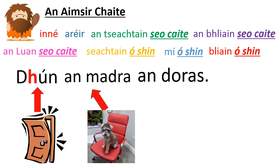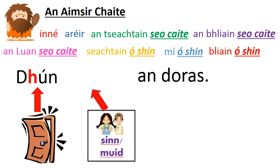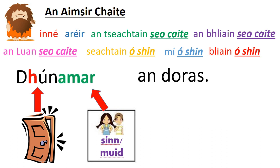You can also put any sort of subject in there — Dhún an madra an doras — the dog closed the door. Dhún Niall an doras. Dhún an múinteoir an doras. Dhún Áine an doras. Now, which one were we missing? We were missing 'muid', which in Irish we can say is 'sinn' or 'muid' — we closed the door. In most dialects of Irish, instead of using a separate word for 'we', we change the ending of our verb to include a new ending. So it looks like this: Dhúnamar an doras — we closed the door.